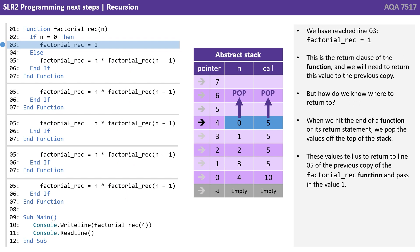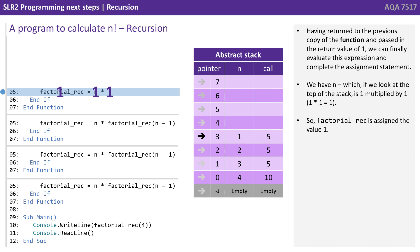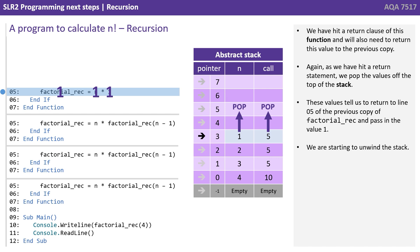This is the return clause of the function, and we need to return this value to the previous copy. When we hit the end of a function or its return statement, we pop the values off the top of the stack. These values tell us to return to line 5 of the previous copy of factorial_rec and pass in the value 1. Having returned to the previous copy and passed in the return value 1, we can finally evaluate the expression. We have n — which, looking at the top of the stack, is 1 — multiplied by 1. 1 times 1 is 1, so factorial_rec is assigned the value 1. We've hit the return clause of this function and pop the values off the top of the stack, telling us to return to line 5 of the previous copy and pass in the value 1.